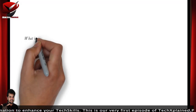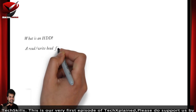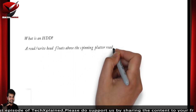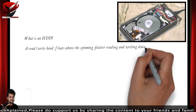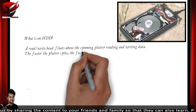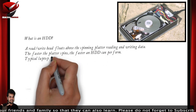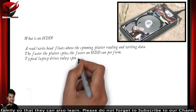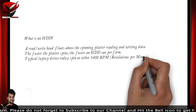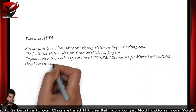Let's begin with HDD — hard disk drive. A hard disk drive has read/write heads that float above a spinning platter, reading and writing data. The faster the platter spins, the faster the HDD can perform. Typically, laptop drives today spin at 5400 RPM or 7200 RPM, and there are some server-based platters which spin at 15,000 RPM.